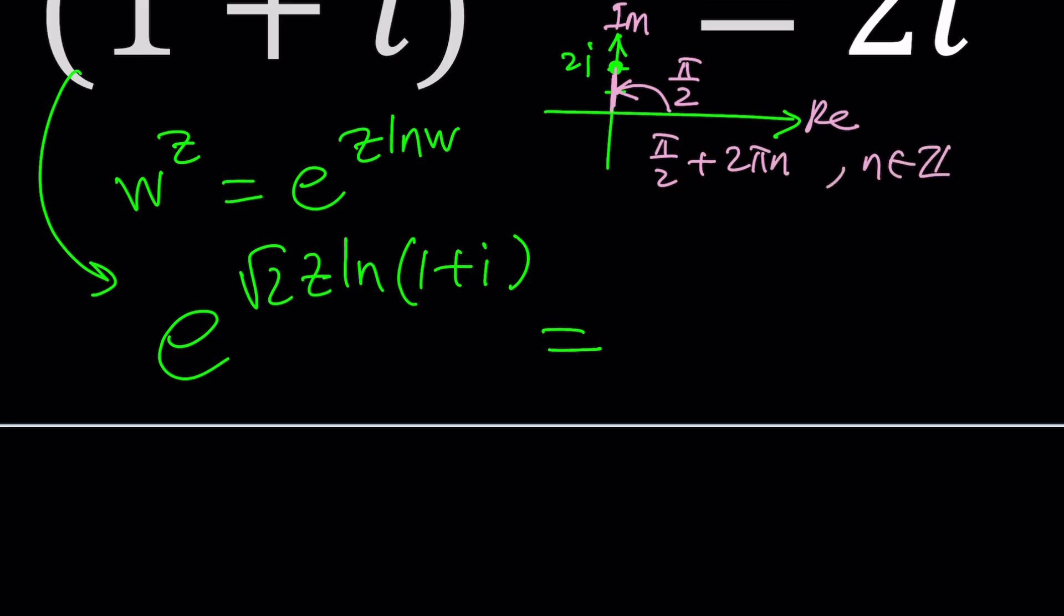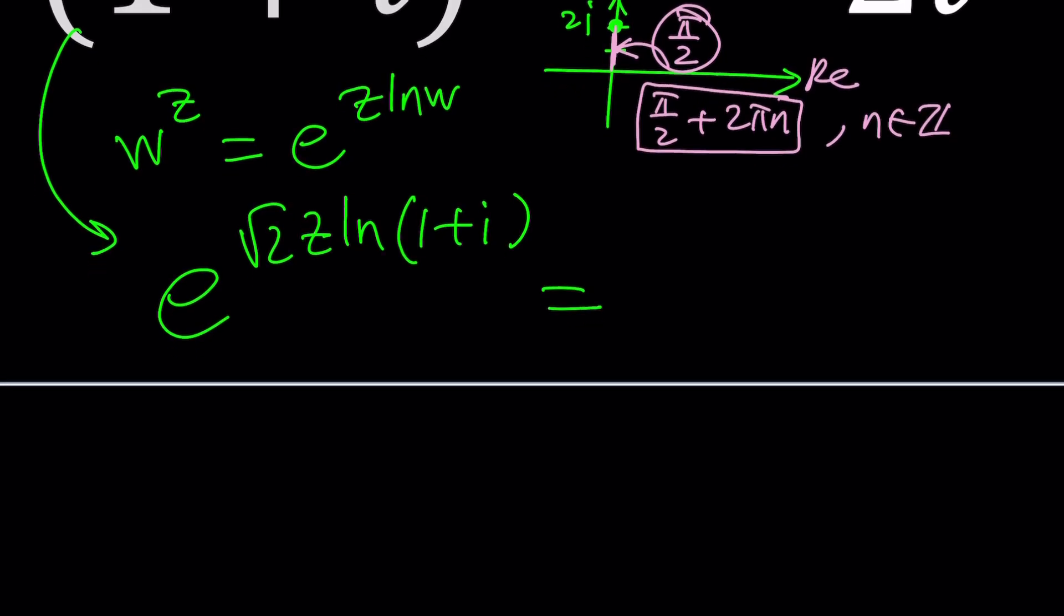But you are welcome to add multiples of 2 pi to it. That's why instead of pi over 2, we're going to write pi over 2 plus 2 pi n or something like this where n is an integer. If I don't specify n is an integer, some people get mad at me. Everybody knows n is an integer but I'm going to say it, n is an integer.